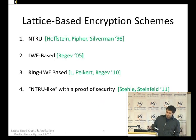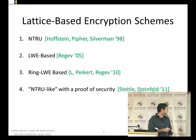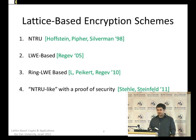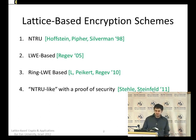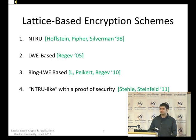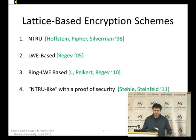Some encryption schemes you might have heard of: there's NTRU, done by Hoffstein, Pipher, and Silverman in '98. Then there's LWE-based stuff — you heard the proof by Regev, and the LWE constructions by Chris on the first day. Then there's ring LWE-based stuff, and NTRU-like stuff with a proof of security, which is somewhat recent. This is the chronological order; I'm skipping some things like the Ajtai-Dwork scheme.